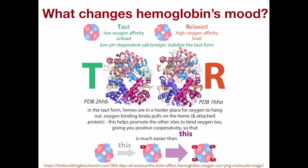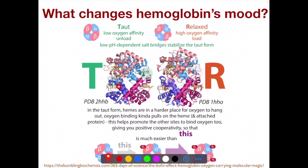So what changes hemoglobin's mood? There are two forms: the taut, or low affinity form, and the relaxed, or high affinity form. The taut form is really useful for unloading oxygen, whereas the relaxed form is really useful for loading it. The taut form is promoted by low pH situations, and you can see that in this form the hemes are sort of tucked away, so it's harder for oxygen to physically bind.